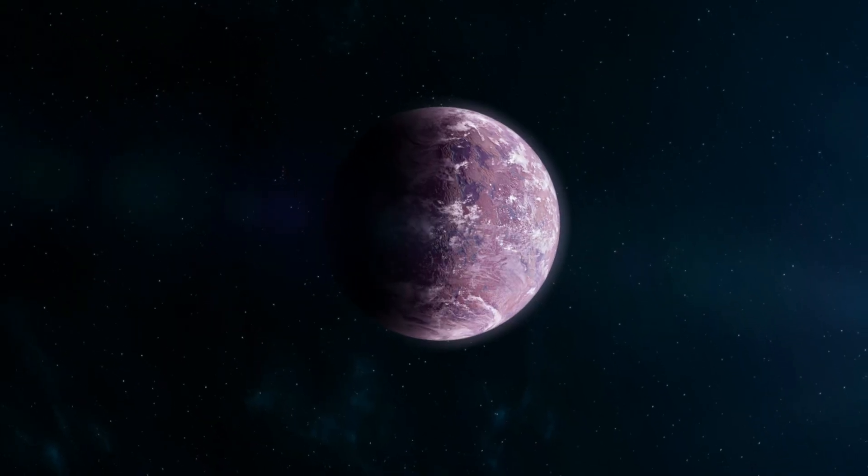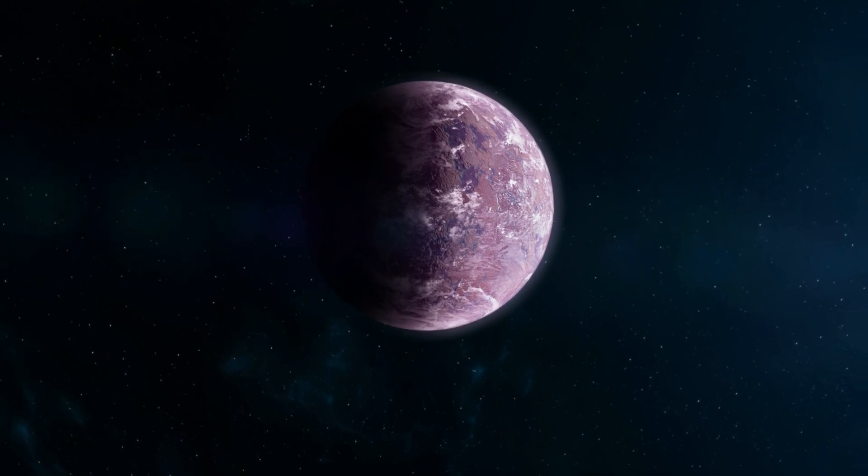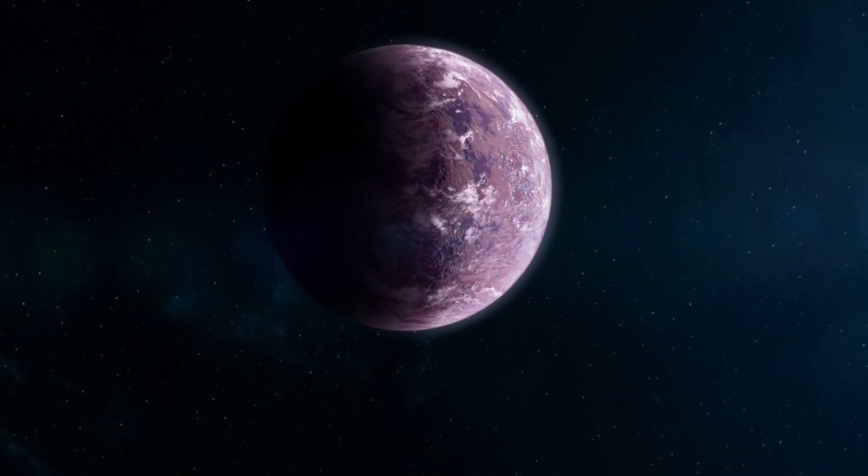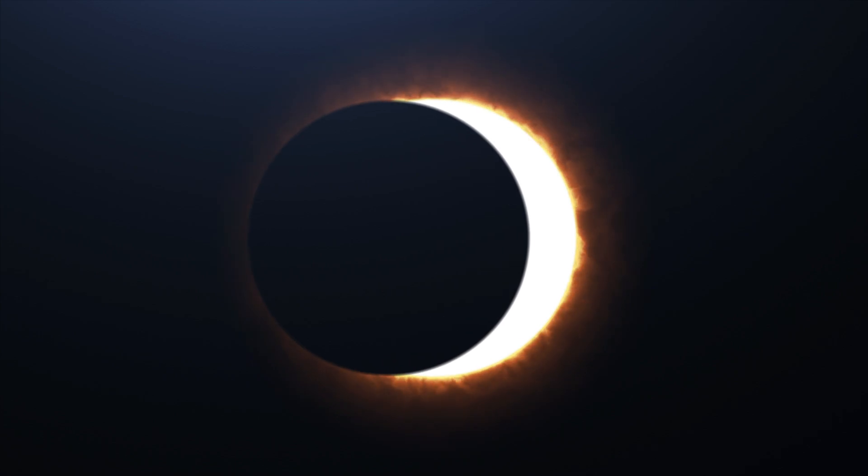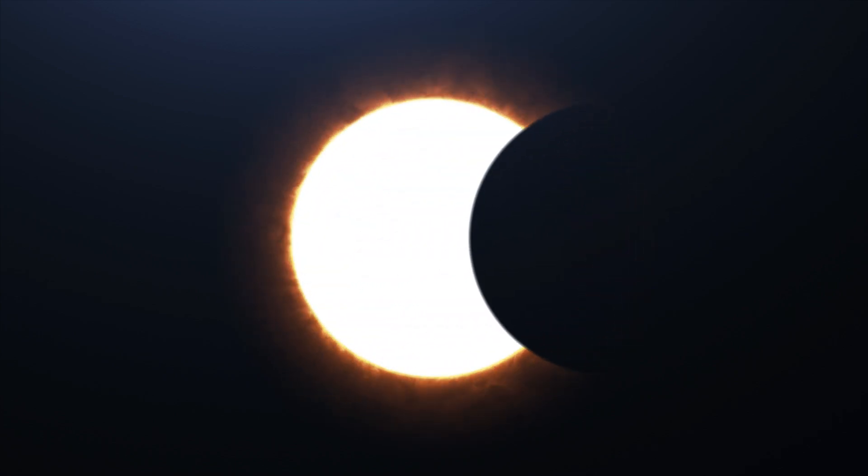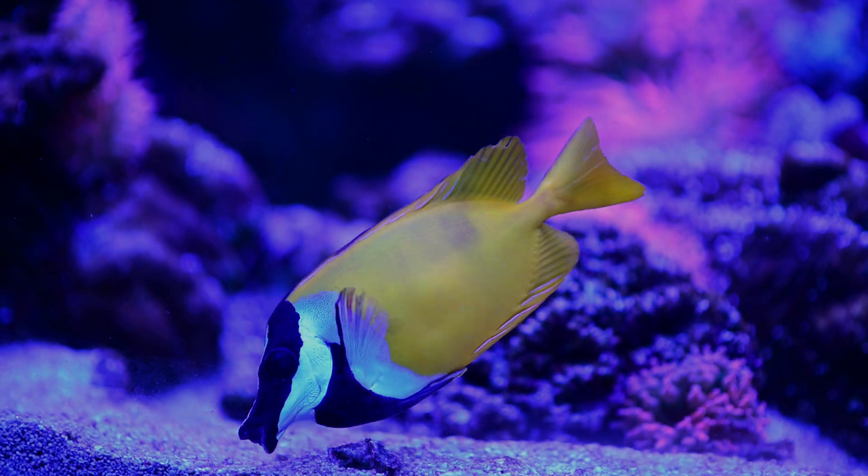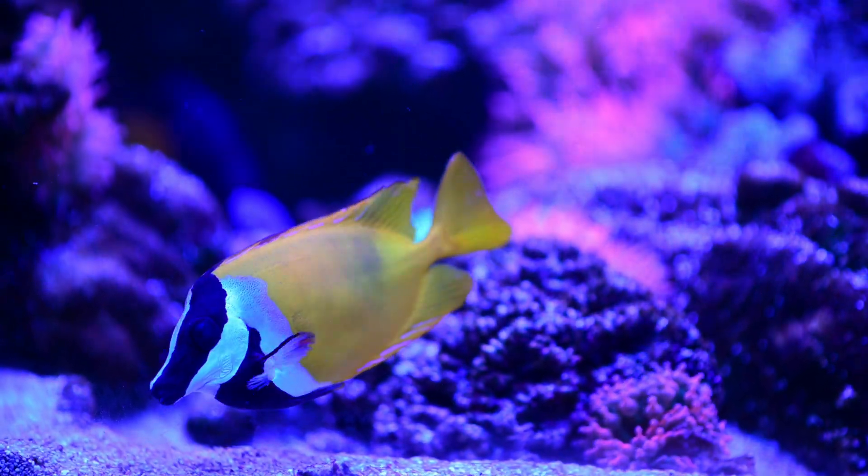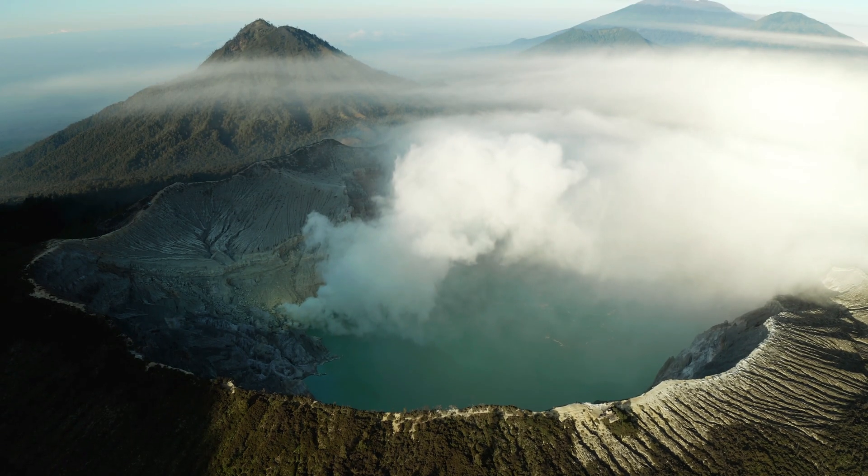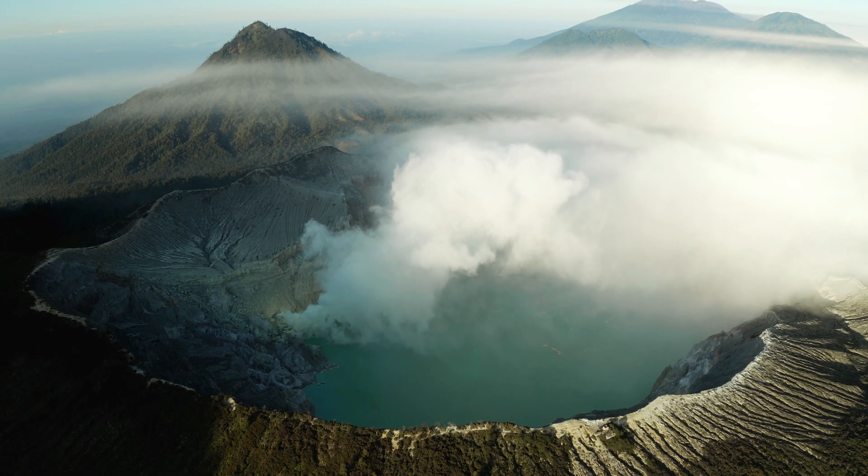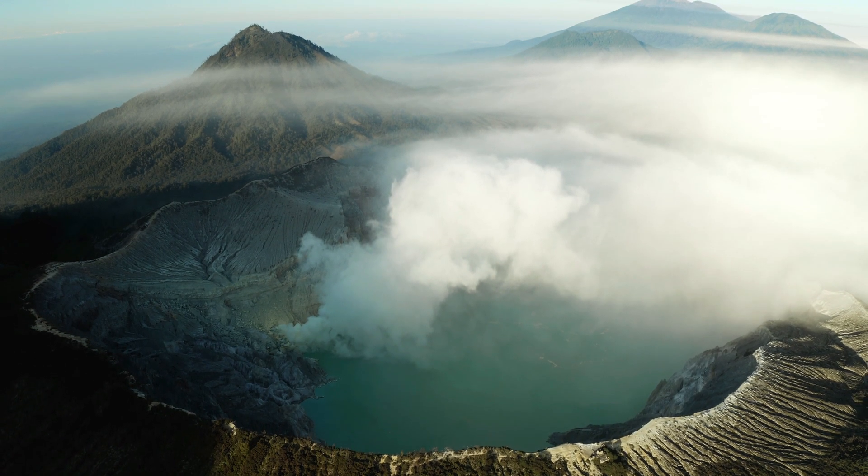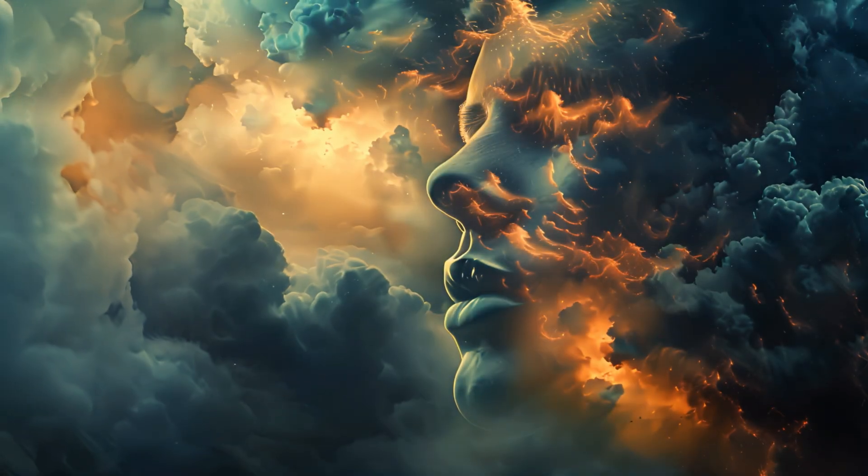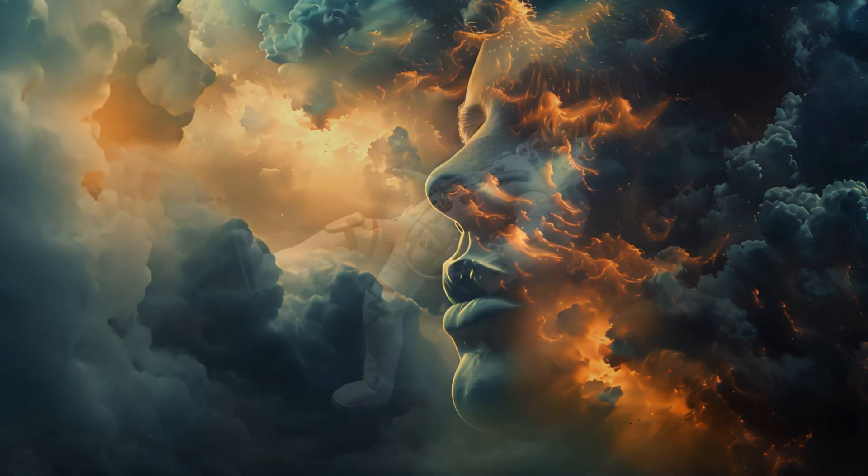On TrES-2b, the lack of sunlight means that the planet is in a state of eternal night. No sunrises, no sunsets, just an unending darkness. If life were to exist on such a planet, it would have to adapt to the complete absence of light. Imagine creatures with heightened senses of touch and hearing, navigating their world through echolocation or other means.